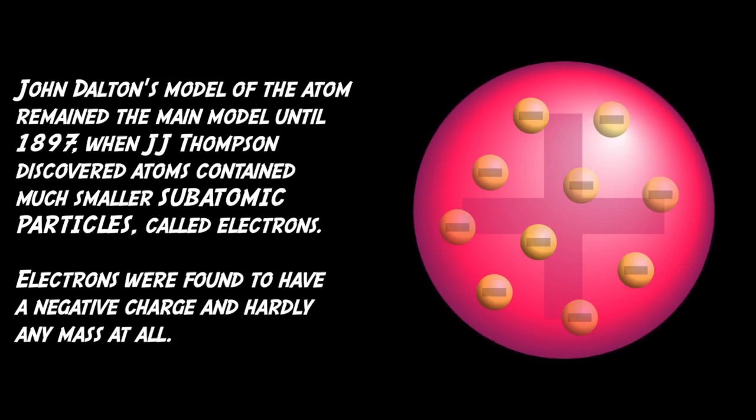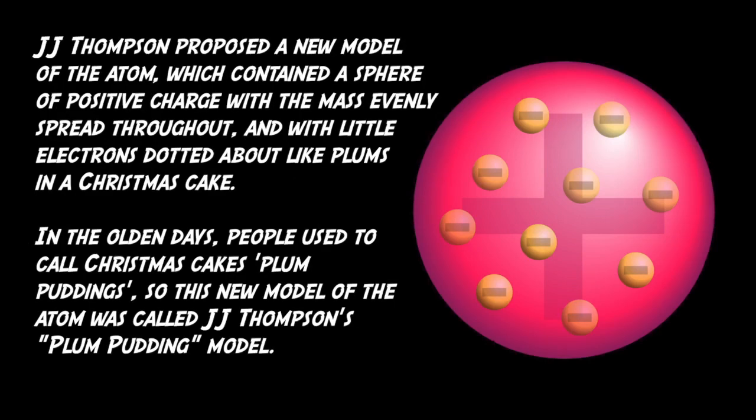John Dalton's model of the atom remained the main model until 1897, when J.J. Thompson discovered atoms contained much smaller subatomic particles called electrons. Electrons were found to have a negative charge in hardly any mass at all.